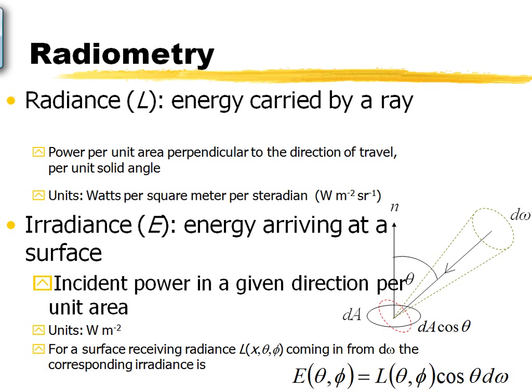Let's first define some basic terms to understand this relationship. The two basic components are radiance and irradiance. Radiance is essentially the energy carried by a particular ray of light, defined in terms of power per unit area perpendicular to the direction of travel of the light, subtended by a specific unit solid angle suspended in space.